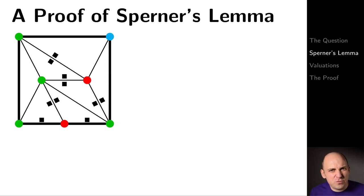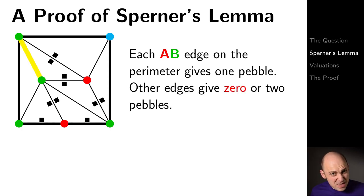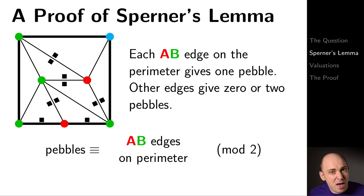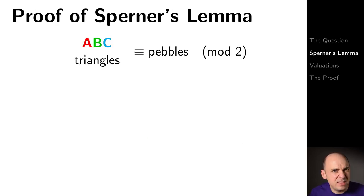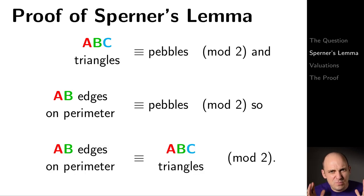Now let's count the pebbles in a different way. Each AB edge on the perimeter gives one pebble. Other edges — edges that aren't AB edges — give zero pebbles, or if they're an interior AB edge, they give two pebbles. Summing all these up, the number of pebbles is congruent modulo 2 to the number of AB edges on the perimeter. We previously saw that the number of ABC triangles is congruent to the number of pebbles modulo 2, and we just saw that the number of AB edges on the perimeter is also congruent to the number of pebbles modulo 2. So we've proved Sperner's Lemma: the number of AB edges on the perimeter has the same parity as the number of ABC triangles.